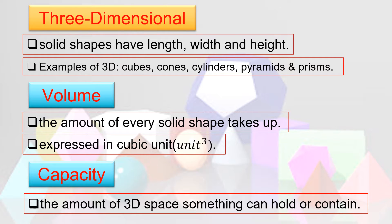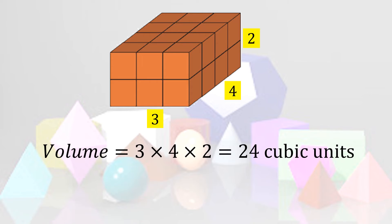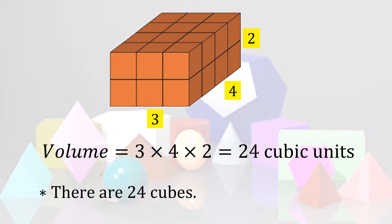Capacity is another term for volume — it is the amount of 3D space something can hold or contain. For example, suppose we have a rectangular block. Instead of counting the number of cubes, we multiply the dimensions: 3 by 4 by 2. Solving for the volume, it is equal to 3 times 4 times 2, which equals 24 cubic units. So there are 24 cubes.